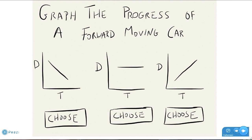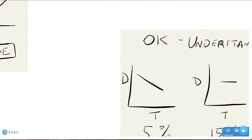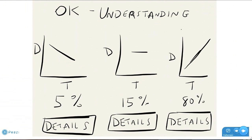So the first graph, downward-sloping line, shows a car that's actually moving backwards, losing distance over time. The middle line is flat, shows a car that is not moving at all, no distance change over time, so it's a car that's staying still. And the graph on the right is an upward-sloping line. It's a car that is gaining distance over time. So that is the correct answer for graphing the progress of a forward-moving car. So all the students click in their answer, and in real time, the system is able to tabulate the results.